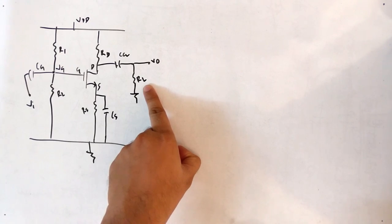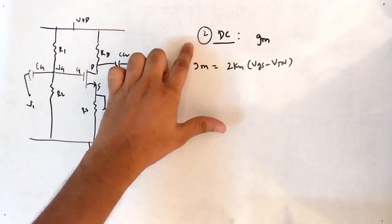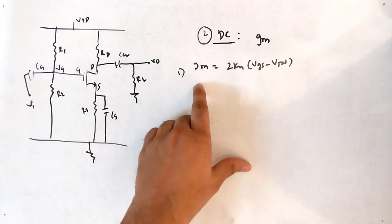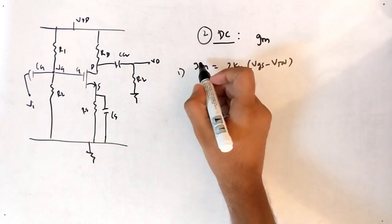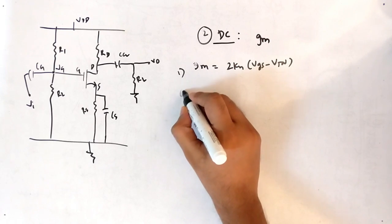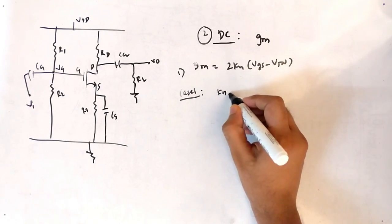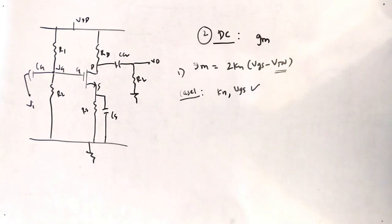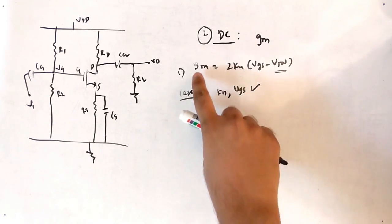The second point is DC analysis. We do DC analysis to find the term GM. GM is equal to 2·KN·(VGS minus VTN). Now, what can be the cases? Case 1: KN is given and VGS is given. VTN is always given in the equation. So KN is given, VGS is given — our task is simple, we can find GM directly.